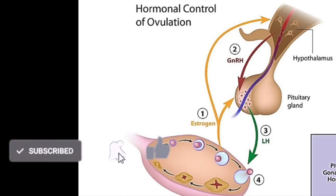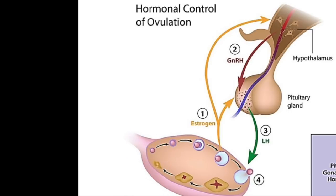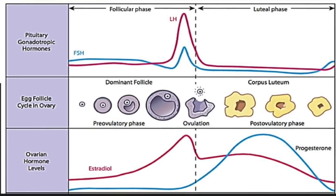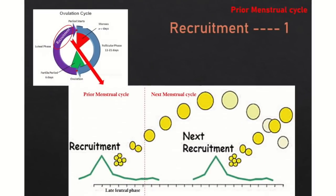When the follicle is matured and estrogen secretion is at its peak, the pituitary receives positive feedback for LH surge in a short loop. This LH surge causes ovulation to occur. The journey of ovulation begins during the late luteal phase of the prior menstrual cycle, when 2 to 5 mm size healthy follicles from the population are selected, from which the dominant follicle is to be chosen for the next menstrual cycle. This process is called recruitment.